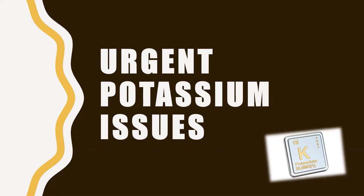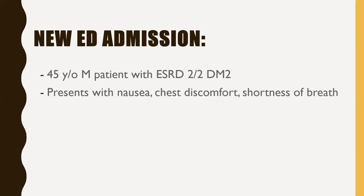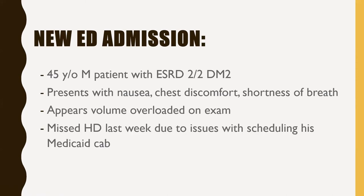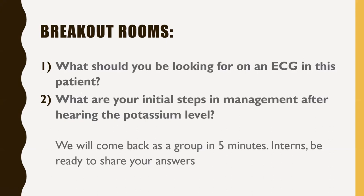Now for urgent potassium issues. A 45-year-old male with end-stage renal disease secondary to diabetes presents with nausea, chest discomfort, and shortness of breath. He appears volume overloaded and missed dialysis last week due to a scheduling issue with his Medicaid cab. The ED ordered a stat EKG and labs — EKG appears okay, but the potassium level is 9. What should you be looking for on the EKG and what are your initial management steps?